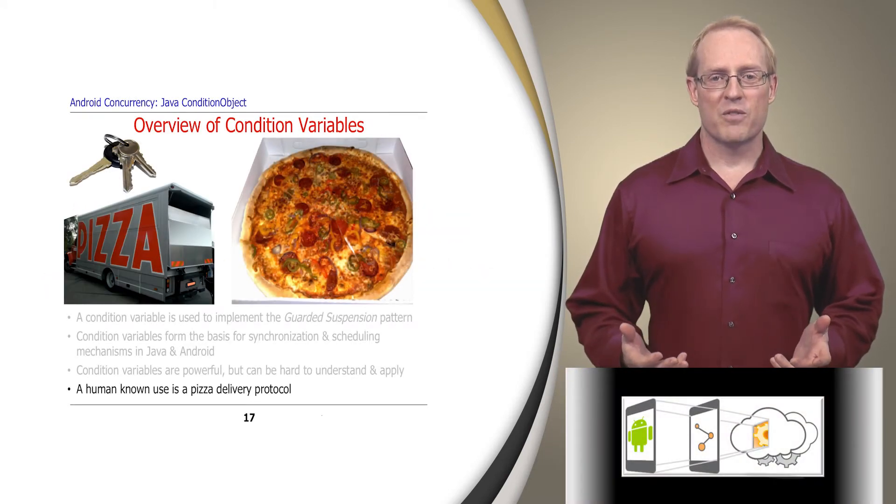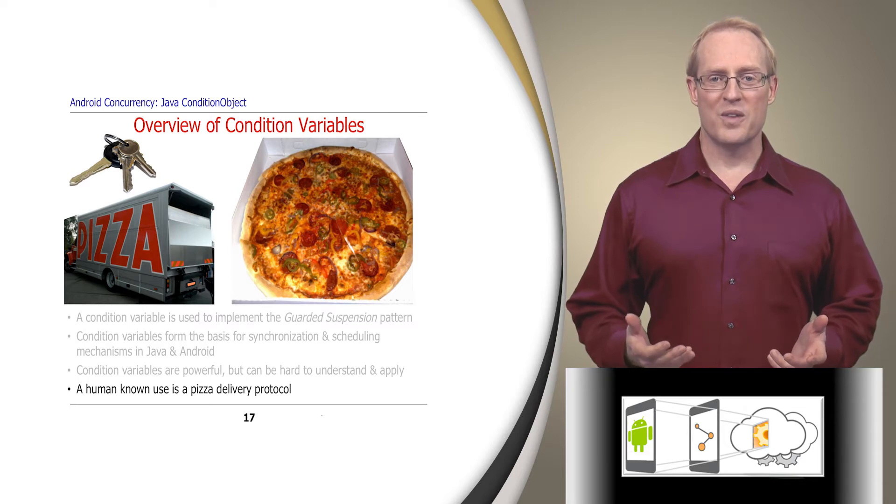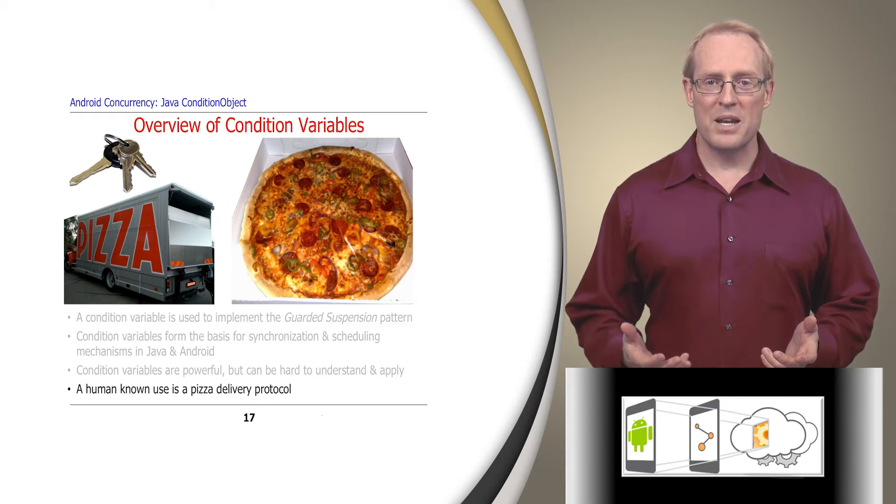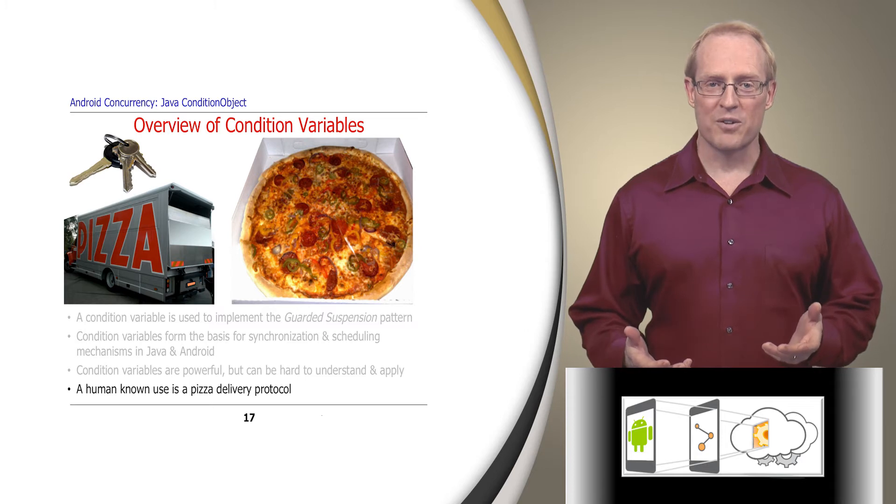A human known use of condition variables is shown in the pictures on this slide. Imagine that you and several of your friends take a second or third job to make some extra money by delivering pizzas, which is a growth industry, since in many places people eat pizza when times are good and they eat pizzas when times are bad.